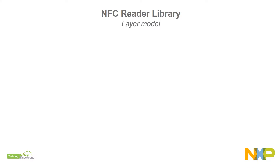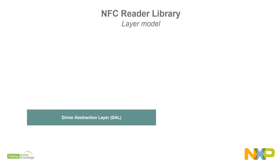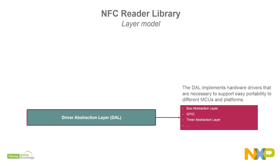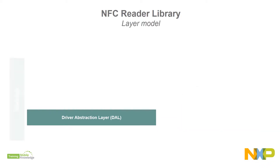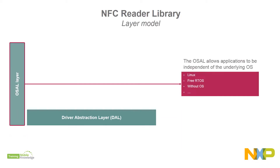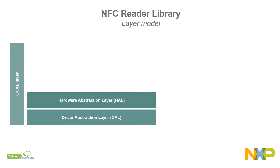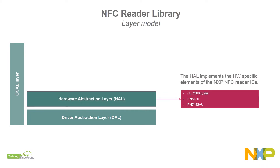The reader library consists of the driver abstraction layer, which implements hardware drivers that are necessary to support easy portability to different MCUs and platforms. The OS abstraction layer, allowing applications to be independent of the underlying operating system. The hardware abstraction layer, which implements the hardware-specific elements of the reader of choice.